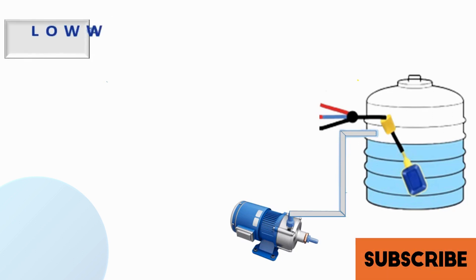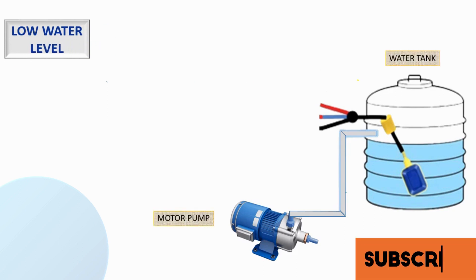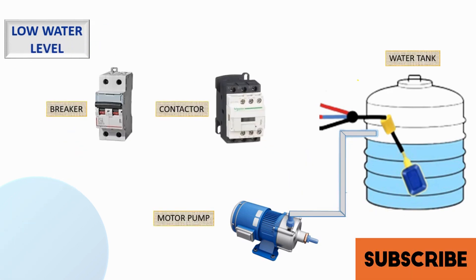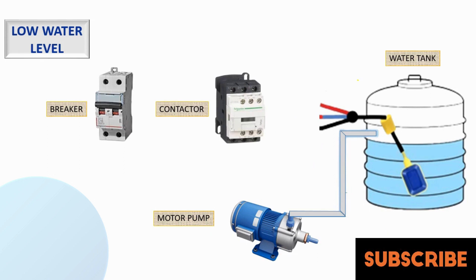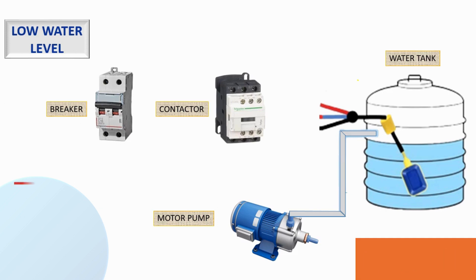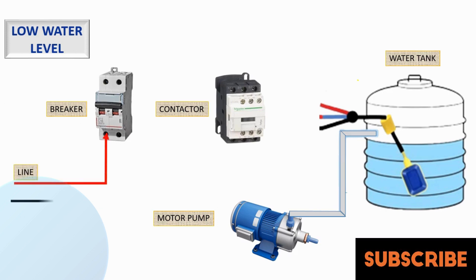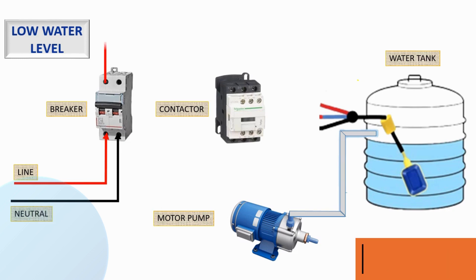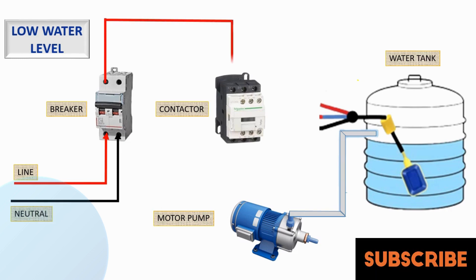Low water level — first action: When water levels drop to a predetermined low, the float switch triggers the control circuit. The control circuit activates the motor, ensuring water is pumped into the tank. This prevents the motor from running dry and safeguards the pump.